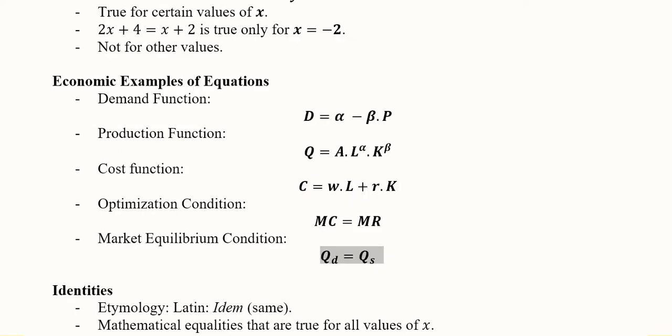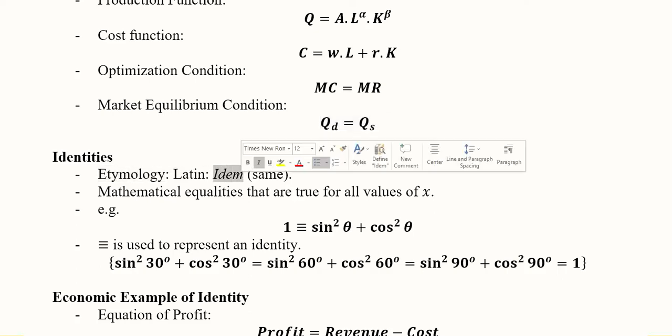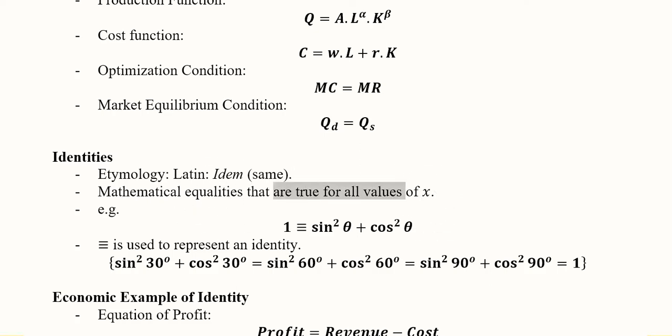But how it differs from identities. Now we should do etymology of it and it says idem. It's a Latin origin which means same and doesn't mean similar. It means same. So it will be something ditto not different in any of the respects. So identity is a kind of equality where any value of x can make the equality become true.